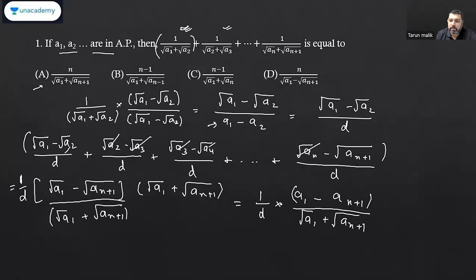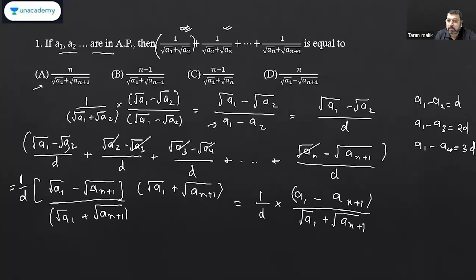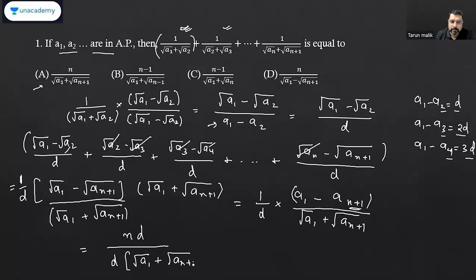Now I need to find the value of (a₁ − a_{n+1}). In an AP: a₁ − a₂ = d, a₁ − a₃ = 2d, a₁ − a₄ = 3d. So when the index is n+1, the value is nd. I can replace the numerator with nd, and since there is already a d in the denominator, d cancels out. The final answer is n / (√a₁ + √a_{n+1}).